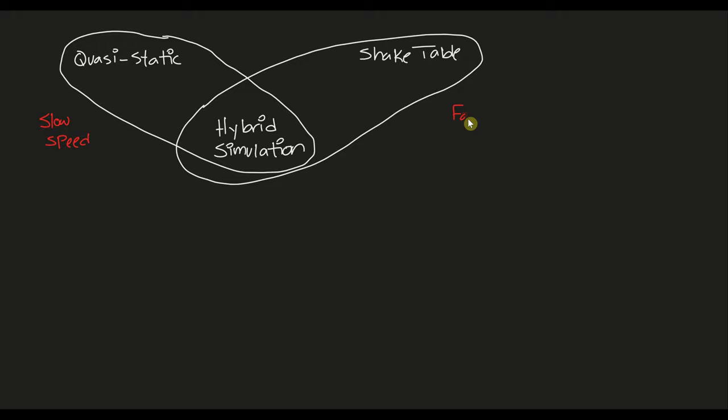And so whenever we have a slow speed, what we're interested in is the static behavior and some of the non-linear behaviors. And when we're looking at fast testing, we're looking at dynamic behaviors as well as non-linear and any kind of material rate dependence that may exist that we want to capture from the experimental testing.